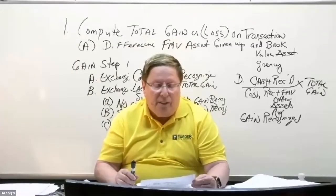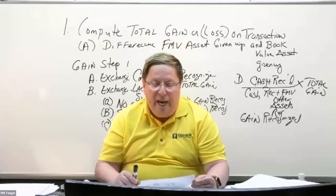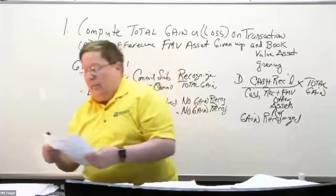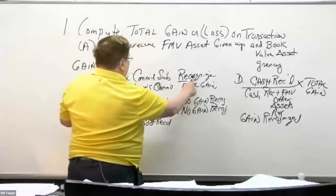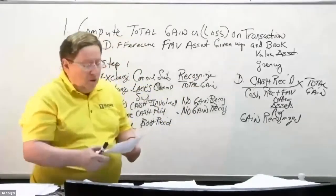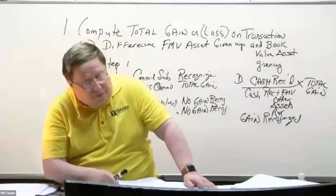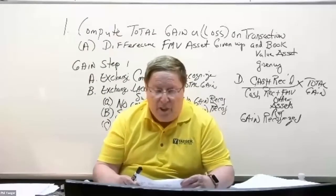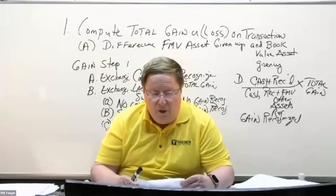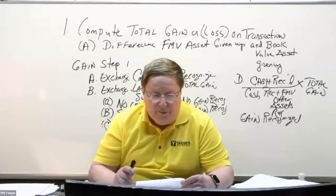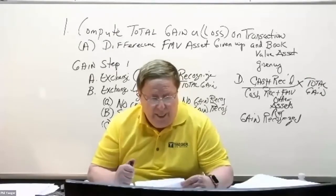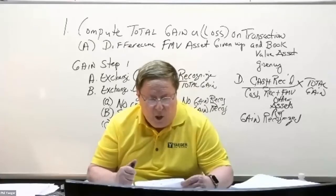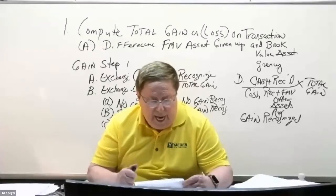On page 2D18, scenario number two: we have a non-monetary exchange that has commercial substance and a gain is recorded. If the exchange has commercial substance, you're going to recognize the total gain. The facts: historical cost is $72K, accumulated depreciation is $26K, fair value of the asset given up is $55K, fair value of the asset received is not known, and cash or boot paid is $13K. They want you to calculate the cost of the asset received and the gain on disposal.